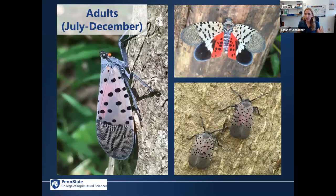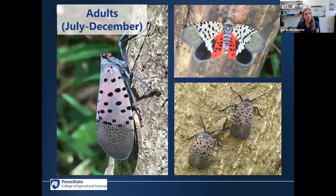Adults are present from July to December and you might see multiple life stages at one time. The adults are the most obvious for positive identification. When at rest, they're about an inch long, inch and a half wide, with wings that are a mauve semi-translucent color. You can see some of the red wings underneath with a really elegant lattice pattern and spots along the wings. When alarmed or flying, they'll unfurl their wings and you can see this very distinctive red patterning at the back — the adults are very easy to identify.